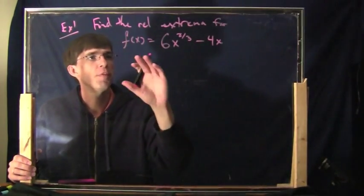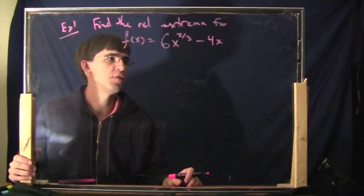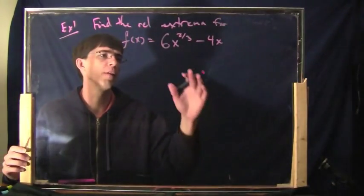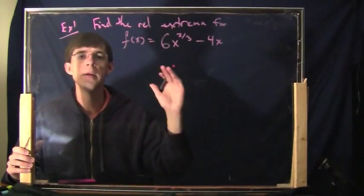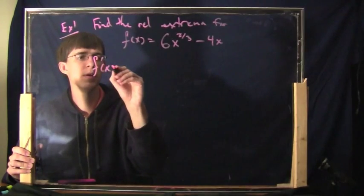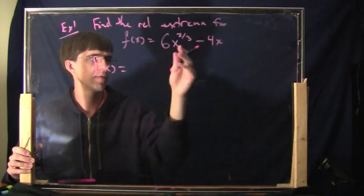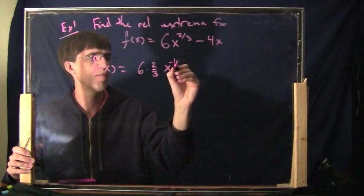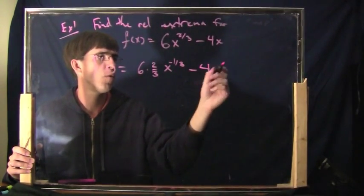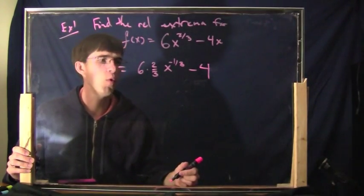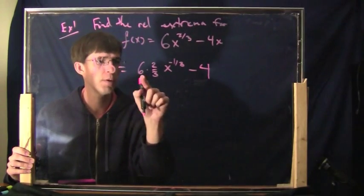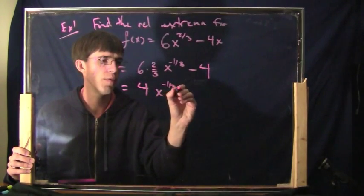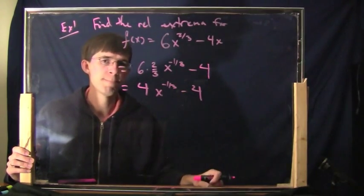Next example. Find the relative extrema for f(x) = 6x to the two-thirds minus 4x. That x to the two-thirds is a little unusual but let's do it anyway. Same steps as always — take the derivative and simplify as much as you can. The derivative: multiply the exponent, six times two-thirds gives four, and two-thirds minus one is negative one-third. The derivative of minus 4x is minus 4. So f prime of x equals 4x to the negative one-third minus 4.